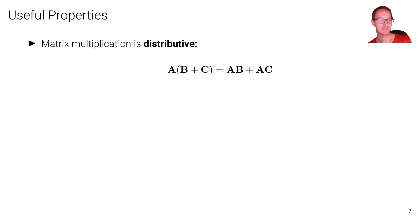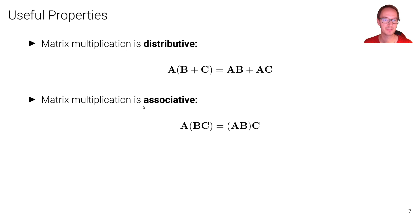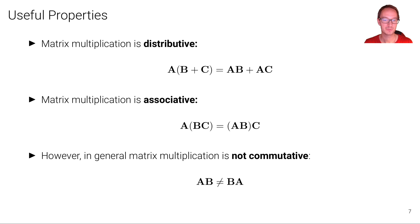Let's now look at some useful properties of matrices. First, matrix multiplication is distributive: A times (B plus C) can be written as A times B plus A times C. Second, matrix multiplication is also associative: A times B times C — we can compute A times B first and then multiply by C. However, in general matrix multiplication is not commutative: we cannot write A times B equals B times A. This is already clear from the dimension requirements we saw earlier.